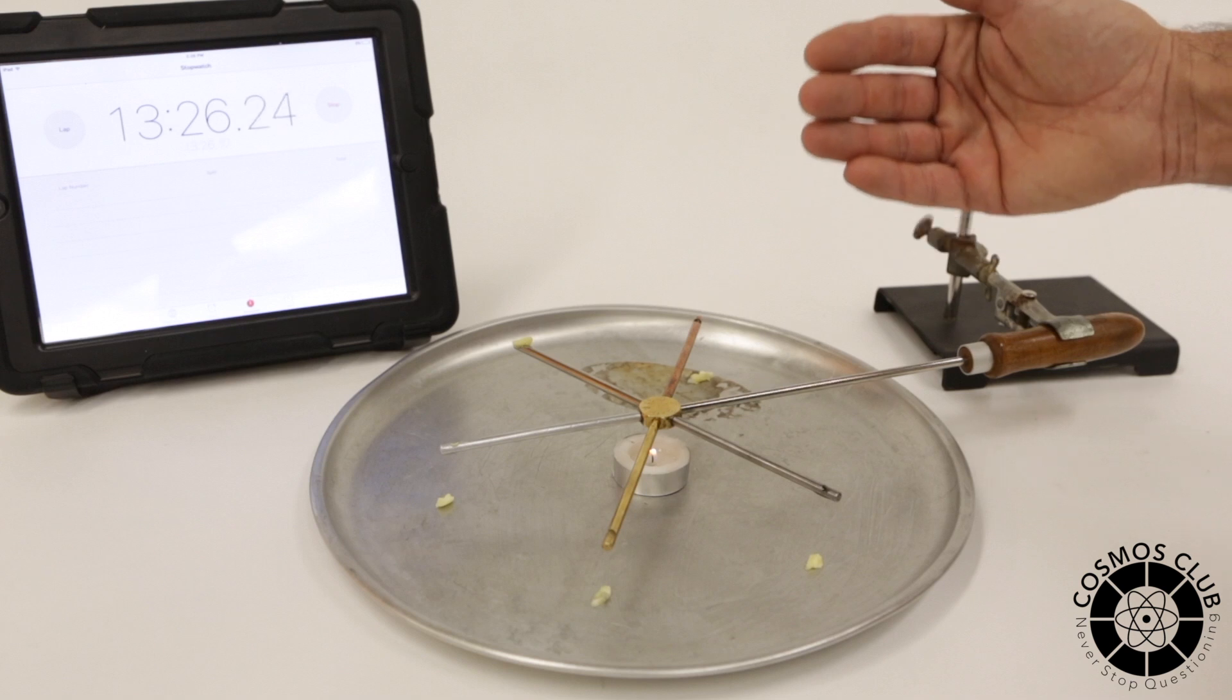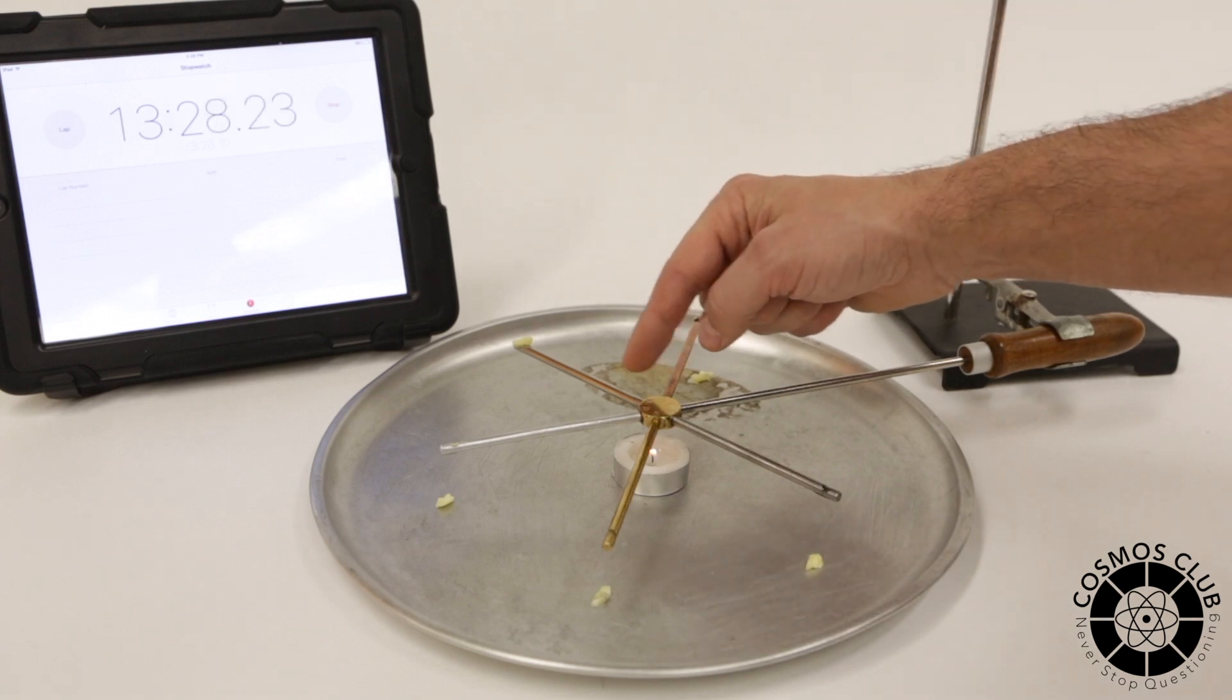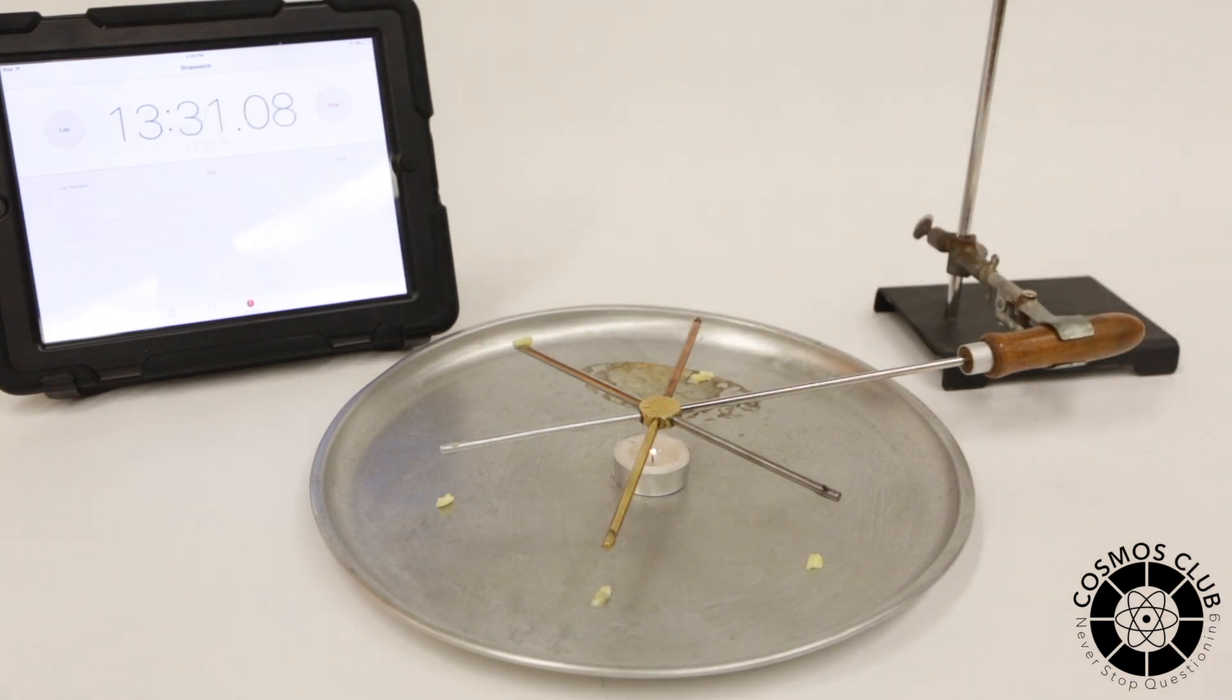If you wanted to build something that would resist heat transfer, but it had to be out of metal, clearly stainless steel would be your choice.